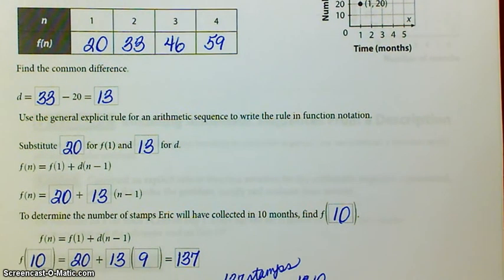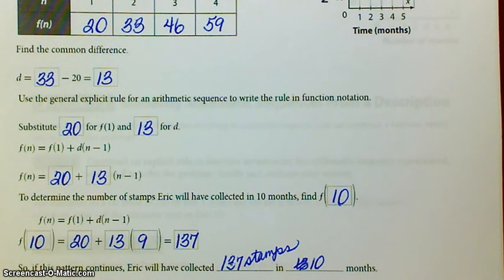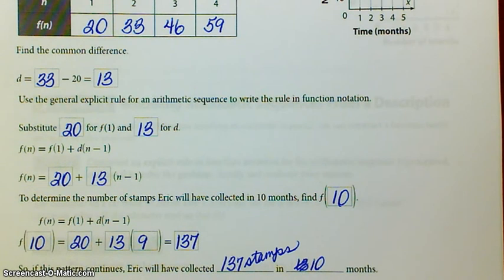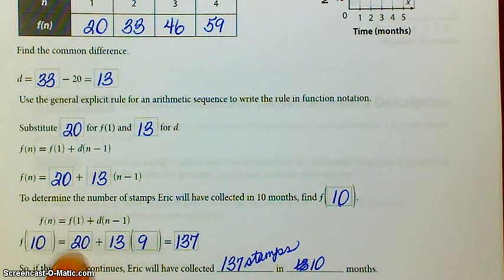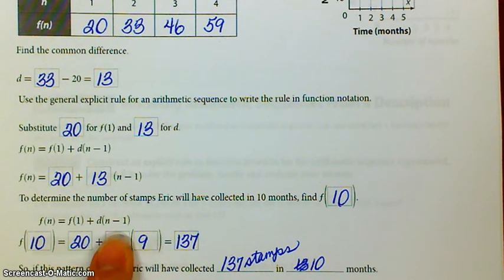And then it asks to determine the number of stamps Eric will have collected in 10 months. So we're going to find f of 10. So f of 10 is equal to f of 1, which was 20, plus 13 times 9. Because remember, it's 10 minus 1. So if this pattern continues, Eric will have collected 137 stamps in 10 months.